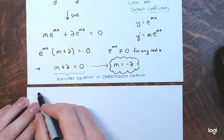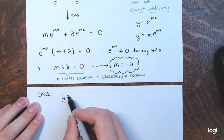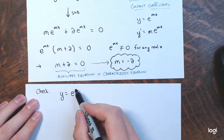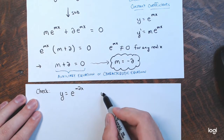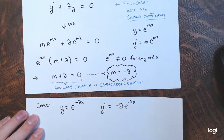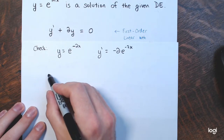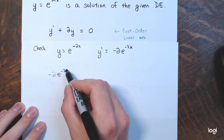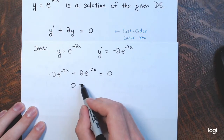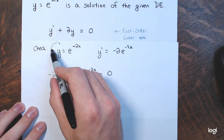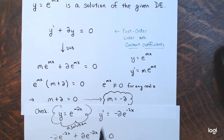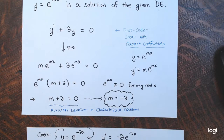We can check this. Replace m with negative 2: y equals e to the negative 2x, and y prime equals negative 2 times e to the negative 2x. Putting these into the equation: negative 2 e to the negative 2x plus 2 times e to the negative 2x equals 0. Yes, you get 0 equals 0 — confirmed. So this is indeed a solution, and the value of m is negative 2, the solution of our auxiliary or characteristic equation.